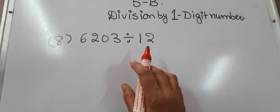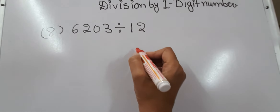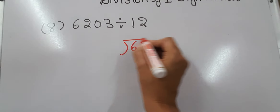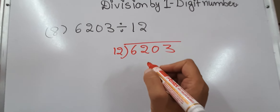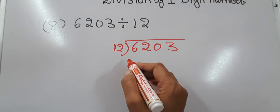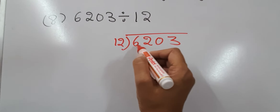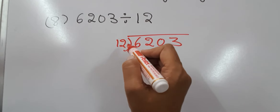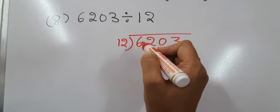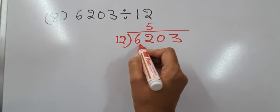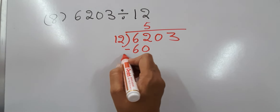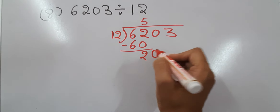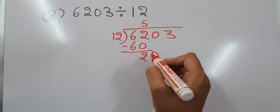Now let us take a division by 12. We have 6203 divided by 12. Since 6 is smaller than 12, we will take these two digits together. In the table of 12: 12×5 is 60, which is just smaller than 62. We subtract and get 2 here. This 0 comes down, giving us 20.